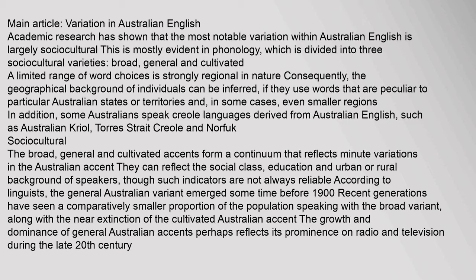Academic research has shown that the most notable variation within Australian English is largely sociocultural. This is mostly evident in phonology, which is divided into three sociocultural varieties: broad, general and cultivated. A limited range of word choices is strongly regional in nature; consequently, the geographical background of individuals can be inferred if they use words that are peculiar to particular Australian states or territories. Some Australians also speak Creole languages derived from Australian English, such as Australian Kriol, Torres Strait Creole and Norfolk.